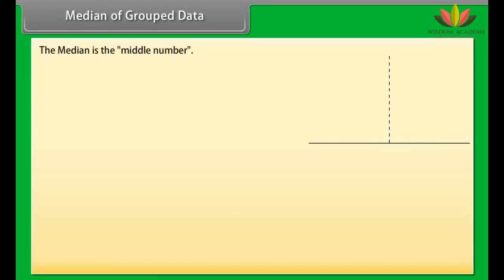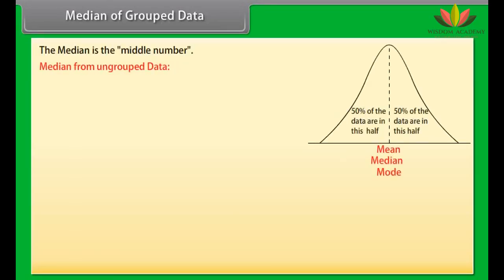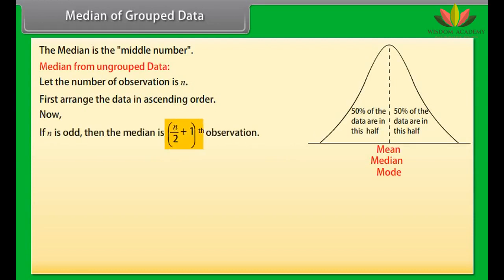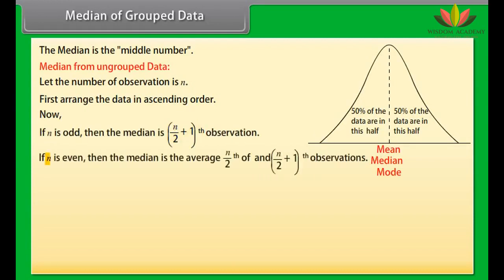Median of grouped data: The median is the middle number. For ungrouped data, let the number of observations be n. First arrange the data in ascending order. If n is odd, the median is the (n/2 + 1)th observation. If n is even, the median is the average of the (n/2)th and (n/2 + 1)th observations.